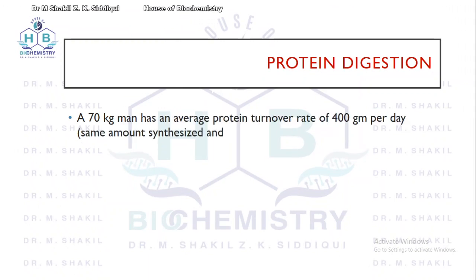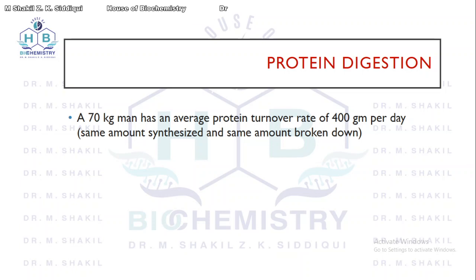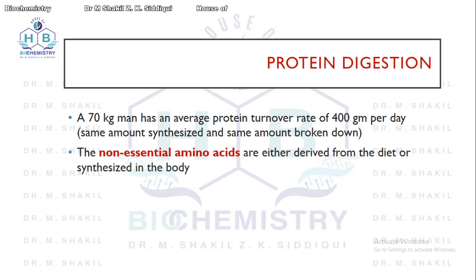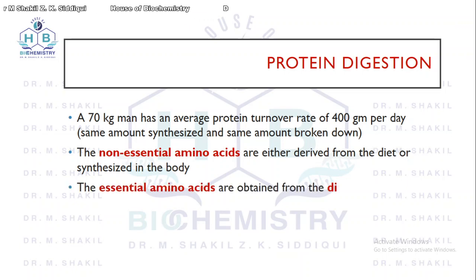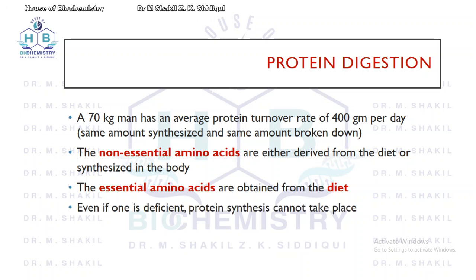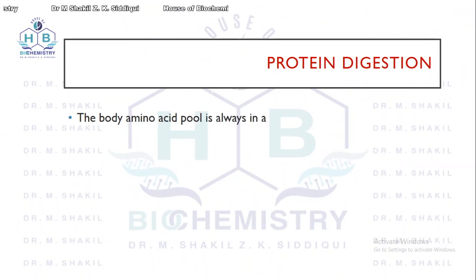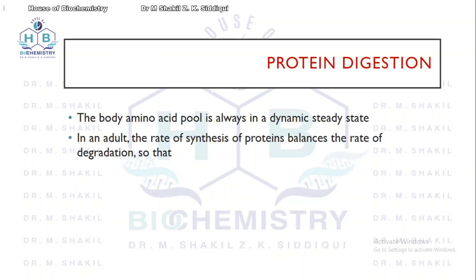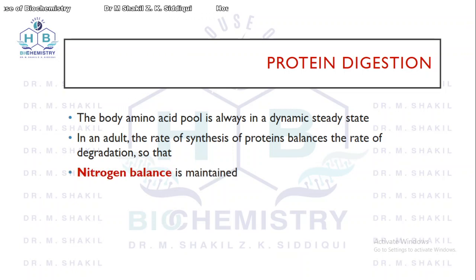An average man who weighs 70 kilograms has an average protein turnover rate of about 400 grams per day — meaning the same amount is synthesized and the same amount is broken down. Non-essential amino acids are either derived from food or synthesized in the body, but essential amino acids must be taken in the diet; otherwise protein synthesis cannot take place, even if one of them is deficient. The body amino acid pool is maintained in a dynamic state so that the rate of protein synthesis balances the rate of degradation, and the nitrogen balance is maintained.